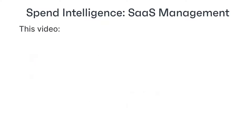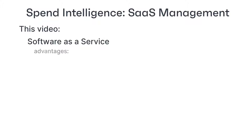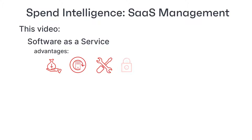In this video we're going to turn our attention to software as a service and how to manage spend in this area. There are many advantages to SaaS over on-prem: you pay for what you use as you use it, you don't have to worry about upgrading, server maintenance, security and so on. However, you do need to keep track of costs, which can be a challenge if you have several suppliers.